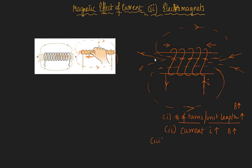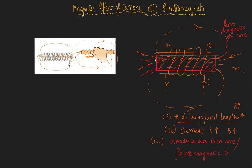There is a third way in which you can strengthen the magnetic field, and this is by introducing a type of material called a ferromagnetic core. The property of the ferromagnetic core is that as soon as you put it in, the magnetic field strength will increase — or amplify — by a thousand times. So introducing a ferromagnetic core will increase the magnetic field strength inside the solenoid.